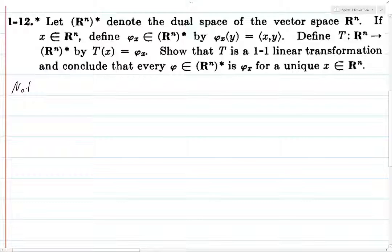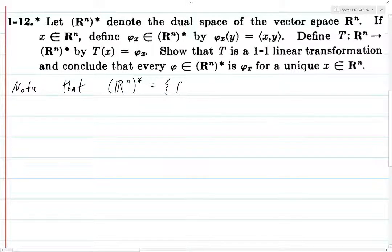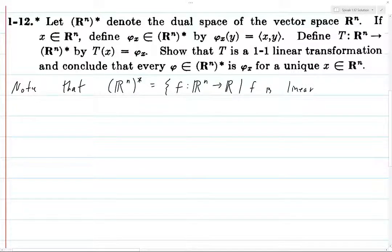So the dual space isn't really defined here — it's typically brought up in an abstract linear algebra course — but just as a refresher, or for the first time potentially: this is the set of all maps or functions from Rn to R, because Rn is a vector space over the field R. So this is all linear maps from Rn to R.